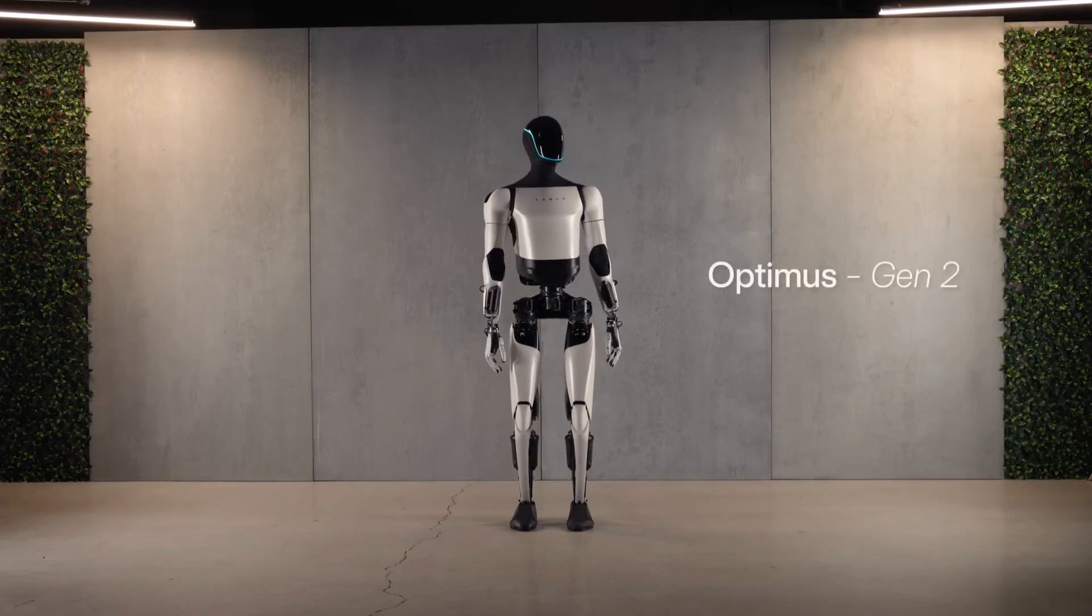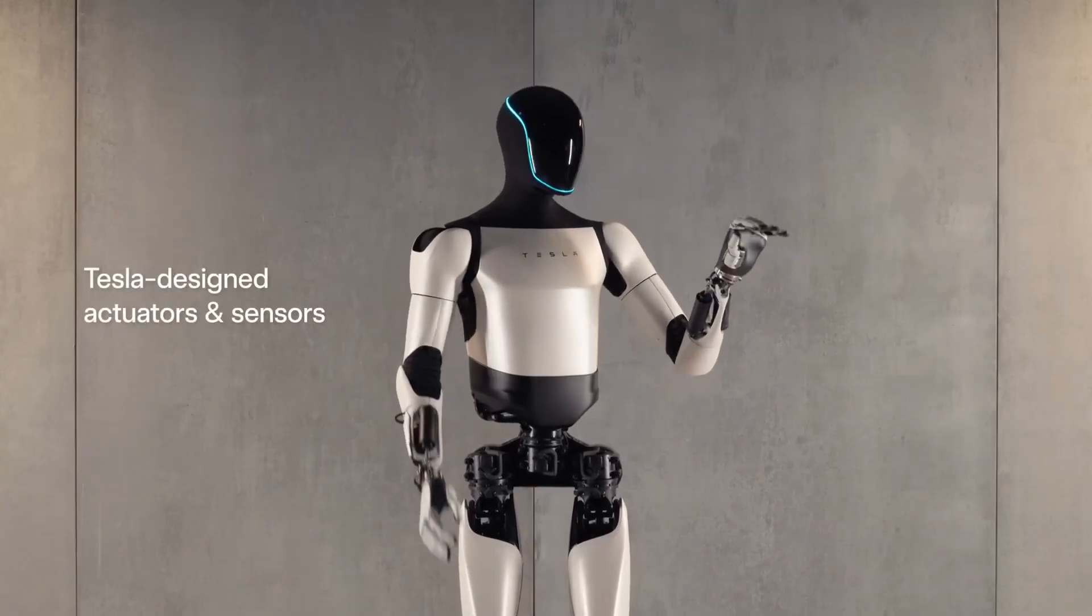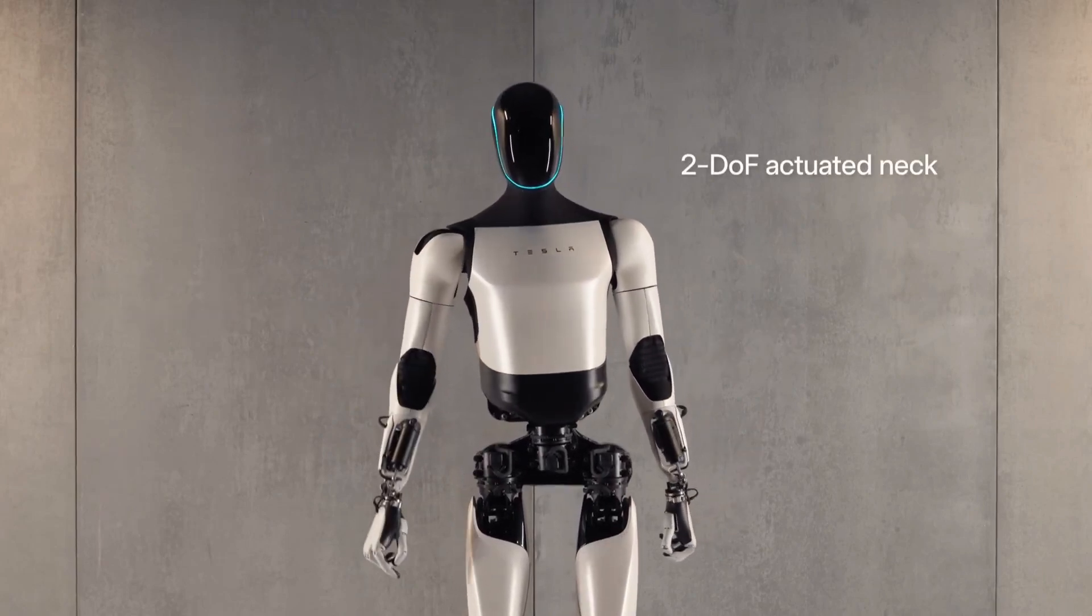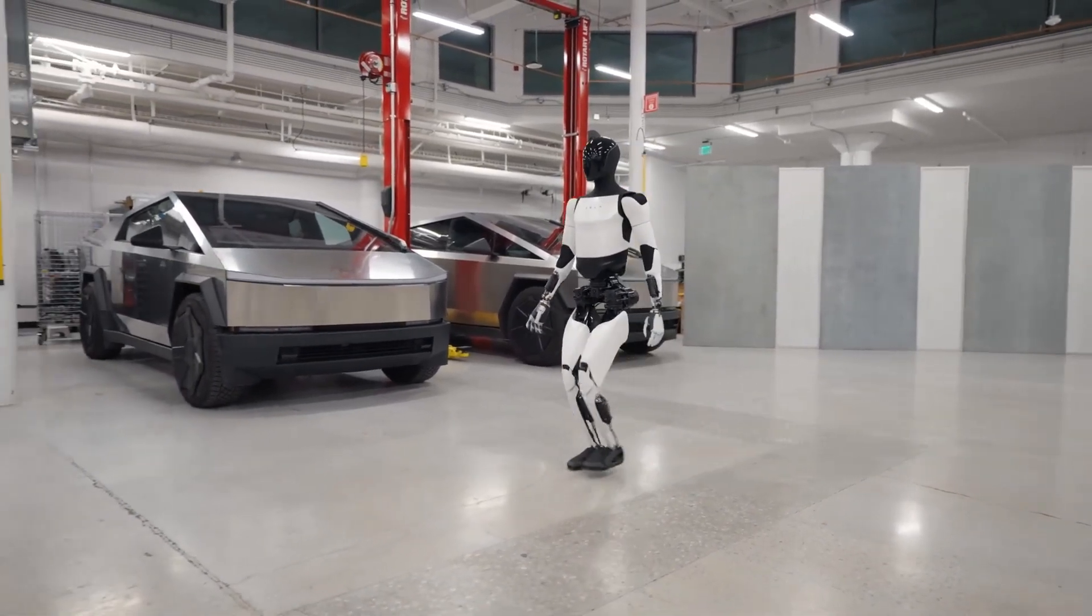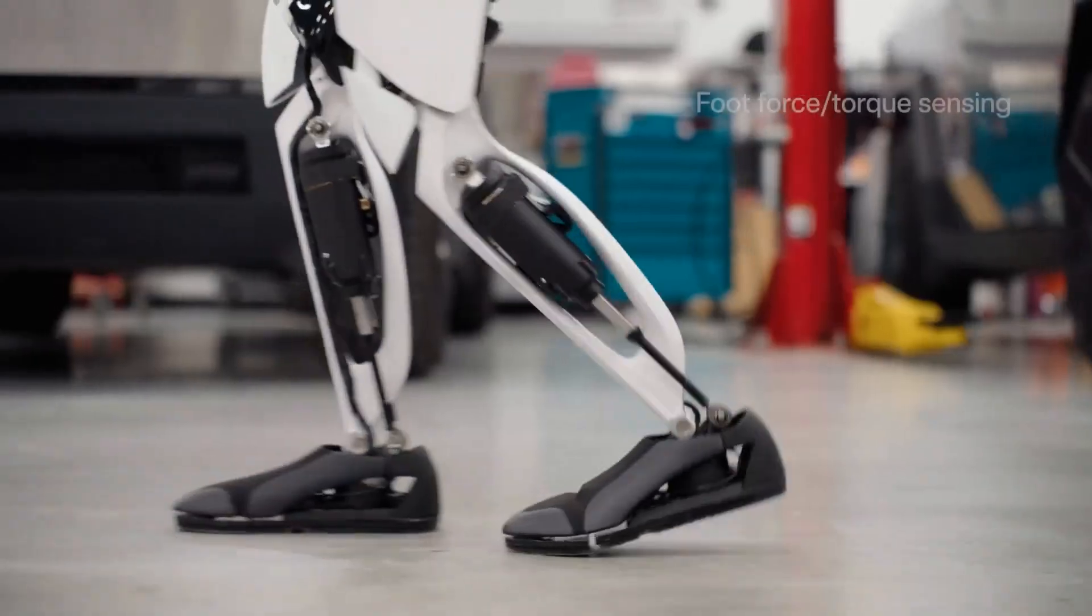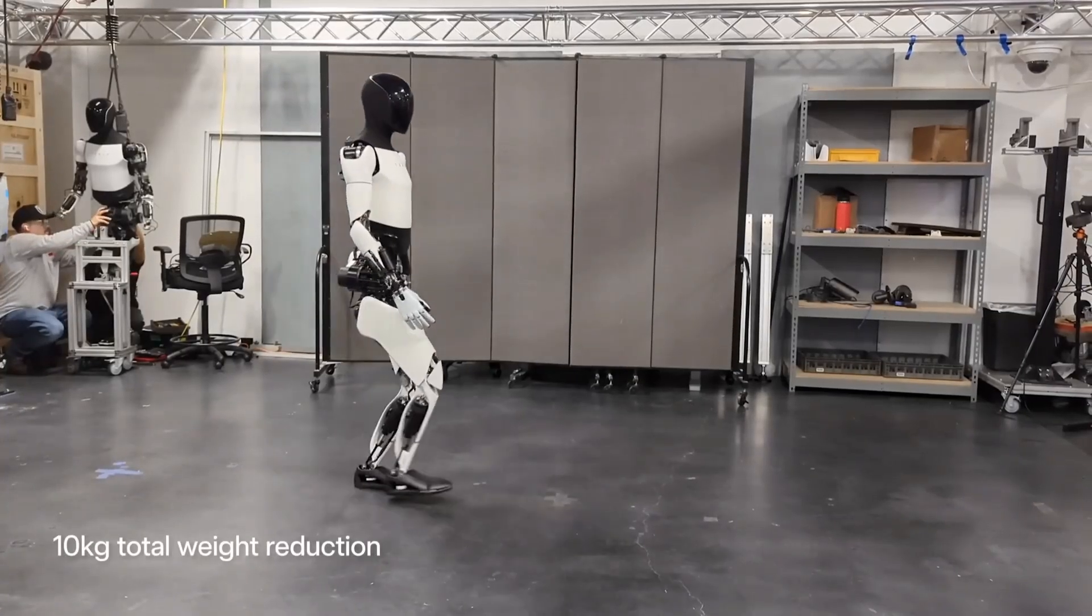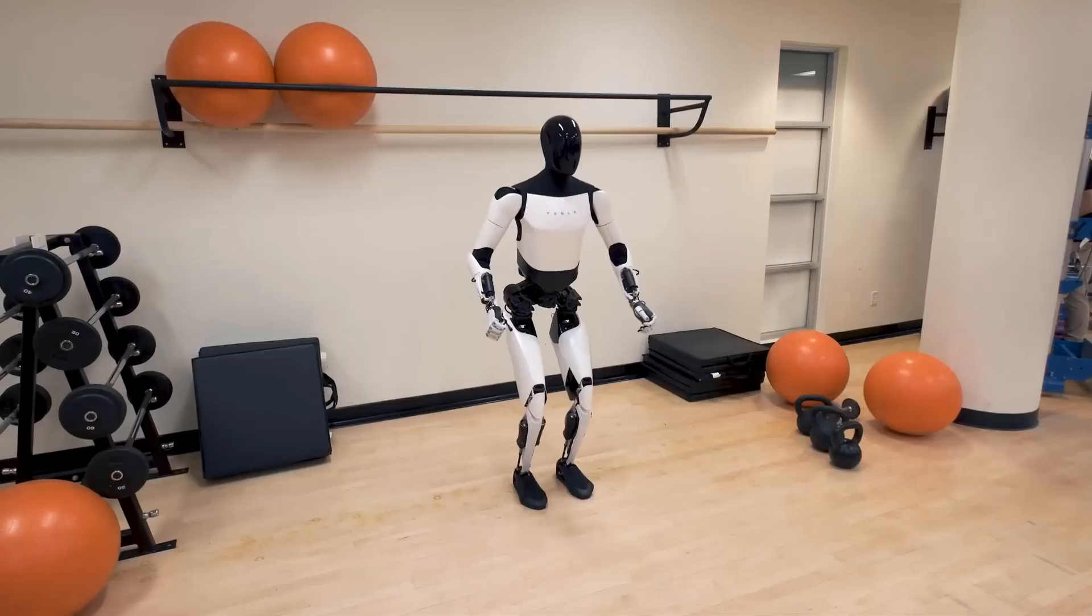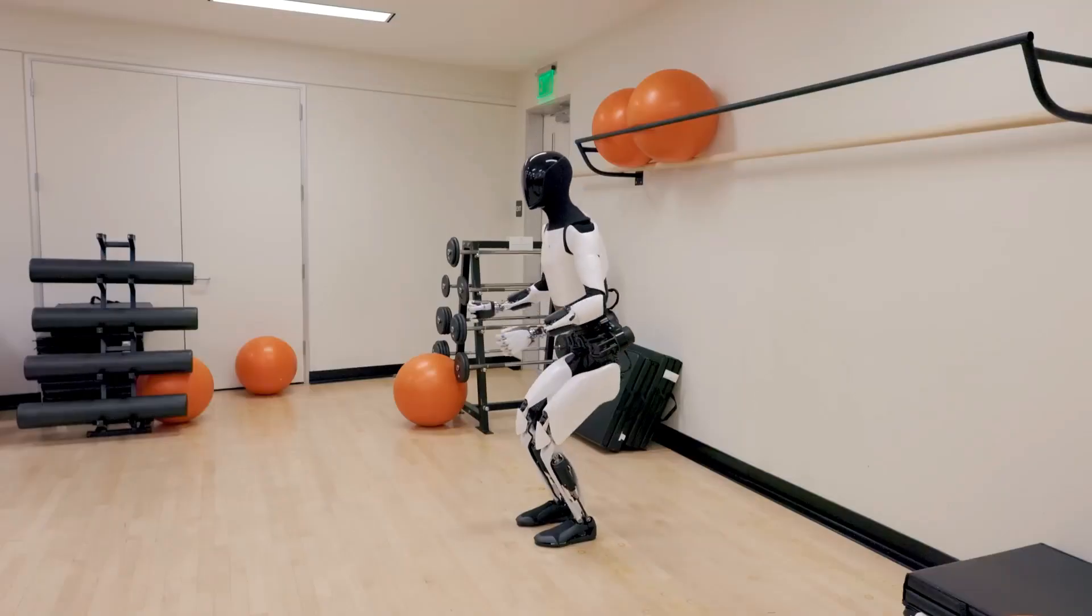You might be wondering why Tesla chose to invest in creating Optimus. The answer lies in addressing tasks that can be a bit of a snooze for us humans. Optimus steps in to handle those tasks with finesse and precision, making it a valuable addition to our daily lives. What's Elon Musk's big idea for Optimus? Optimus can be likened to a super helpful buddy, tackling boring, risky or robot-friendly tasks. Tesla's genius move is using what they've learned from making electric cars and energy systems to create this automation whiz.